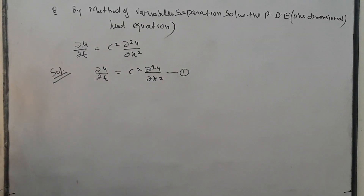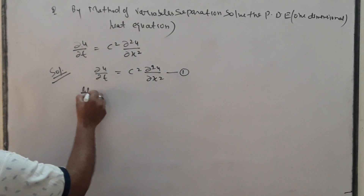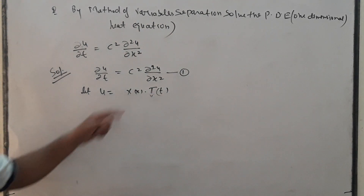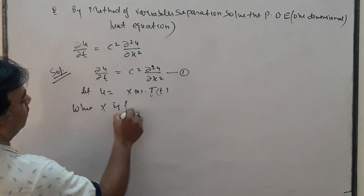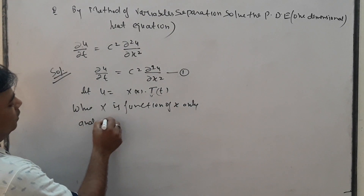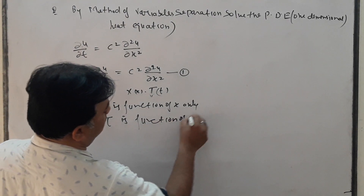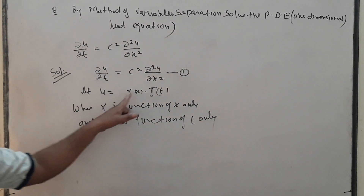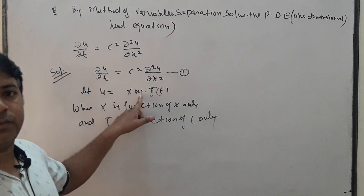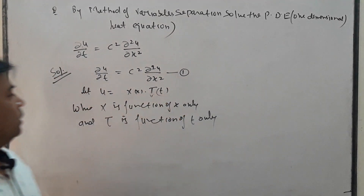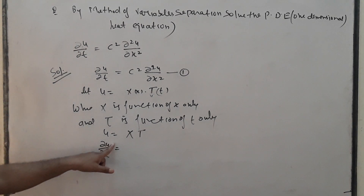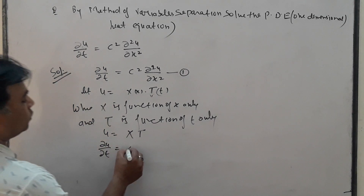As in the previous lecture, we let u depend on x and t. So let u = X(x) · T(t), where X is a function of x only and T is a function of t only. Since u depends on x and t, the derivative of u with respect to t — keeping X constant — gives: ∂u/∂t = X · dT/dt.